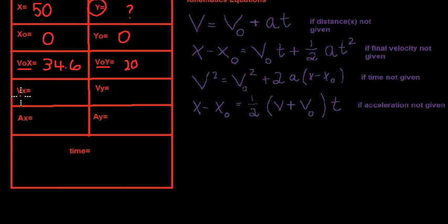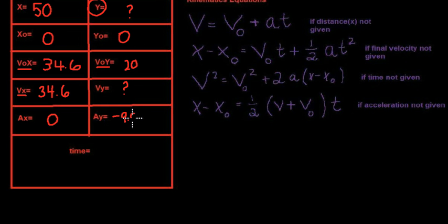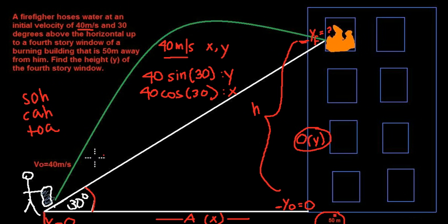The final velocity in the x direction won't change because we don't have an acceleration in the x direction, so it stays at 34.6 meters per second. The acceleration in the x direction is 0. The only acceleration we have is in the y direction, which is negative 9.8 — gravity pulling the water down.